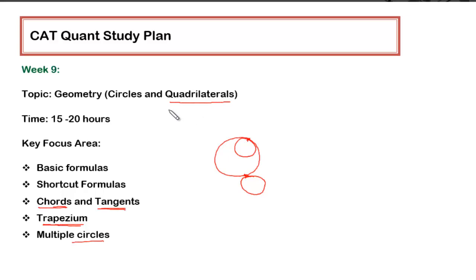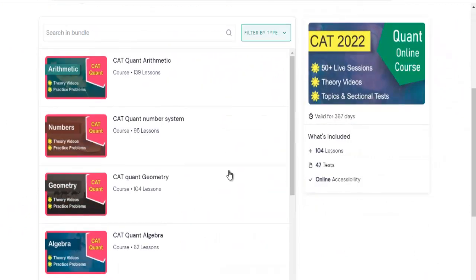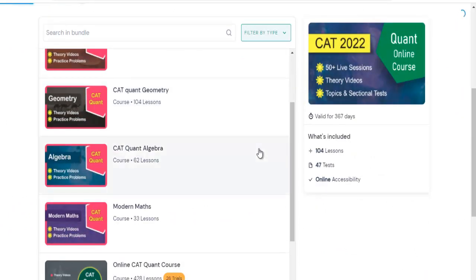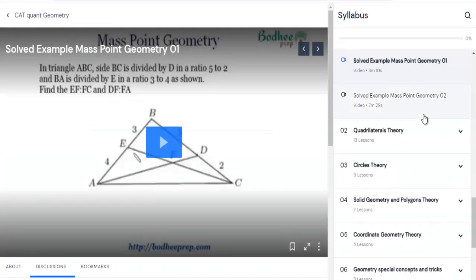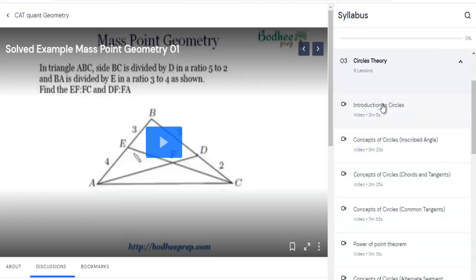Let me show you where to find these topics. Log into the Quant course and go to the CAT Quant Geometry section. Once you open it, you'll find two theory parts: Quadrilateral Theory and Circle Theory.